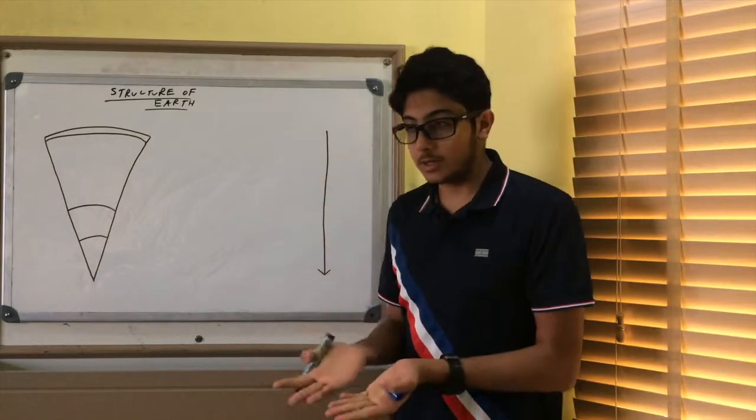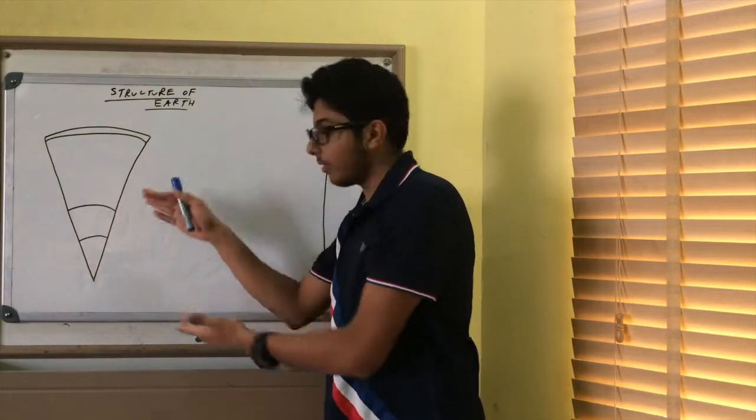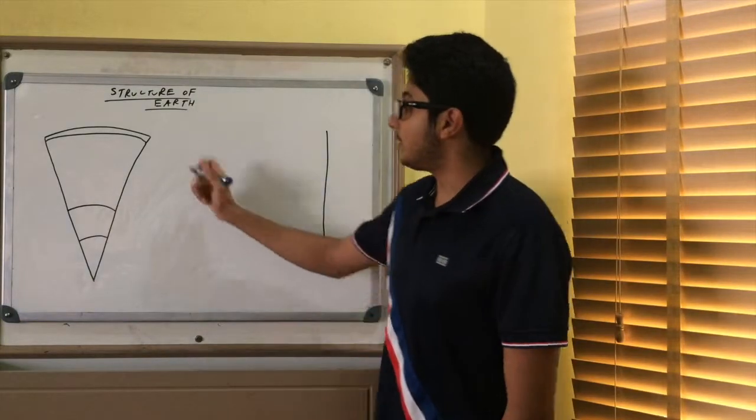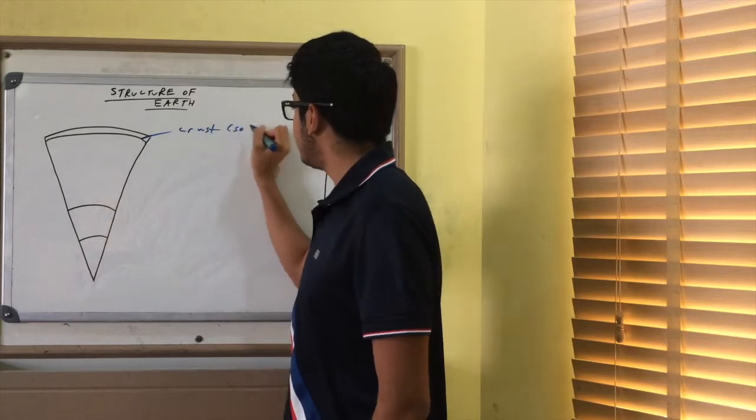Obviously the Earth is round, it's circular, it's spherical. But here I've just given a section of the Earth from top to the center. So the first layer we have the crust, and the crust is obviously solid.